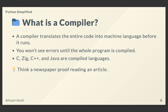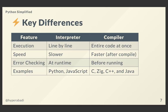A compiler translates the entire code into binary language in one go. You won't see errors until the whole program is compiled. C, Zig, C++, and Java are compiler-based languages. Think of a compiler like a professional newspaper proofreader — he analyzes and proofreads the entire article you submit before it gets published in the daily newspaper.